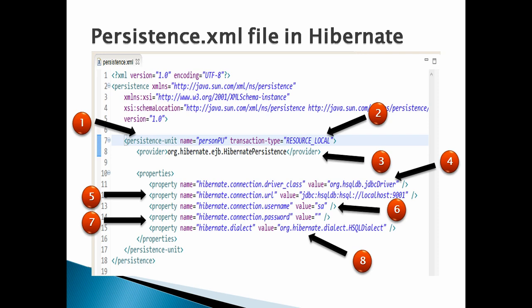Number three: the persistence-unit has an element called 'provider'. This element holds a fully qualified class name for the JPA provider. In our case we are using Hibernate as the provider, with the class name 'org.hibernate.ejb.HibernatePersistence'.